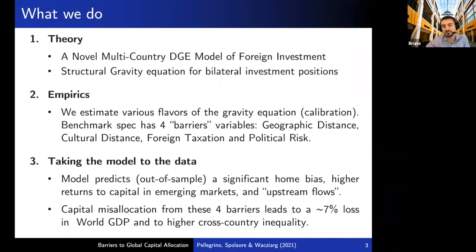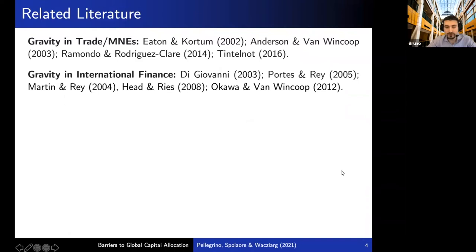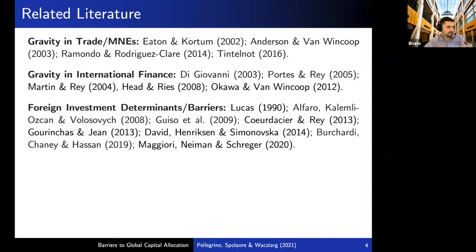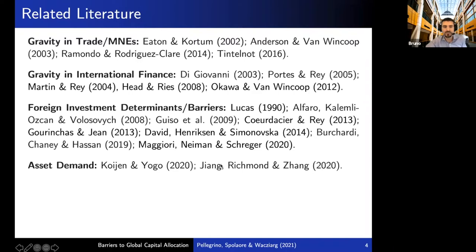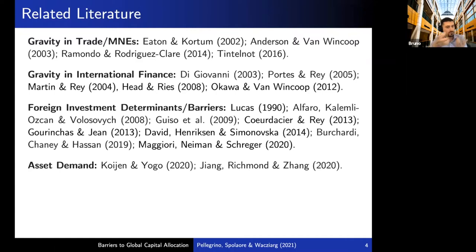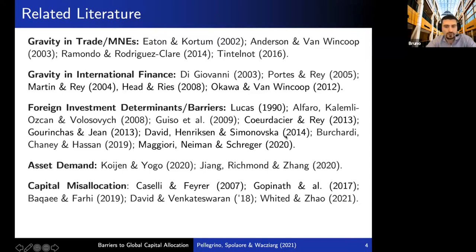We build on an extensive literature. There is a long history of using gravity equations that started in trade and then spilled over into international finance. There is also a big literature investigating the determinants of foreign investment and potential barriers. There is some recent interesting work by some of the organizers studying asset demand systems in international finance. Our model has a demand system for international assets — not as elaborate, but a basic one. And because we study capital misallocation across countries, we also link to the capital misallocation literature and the literature studying cross-country differences in income.